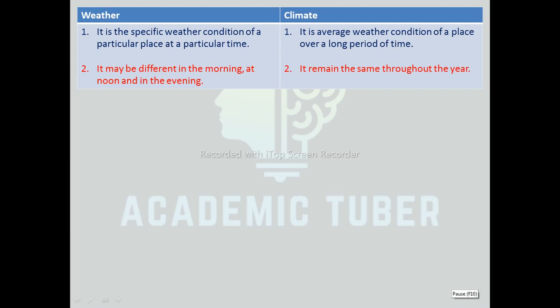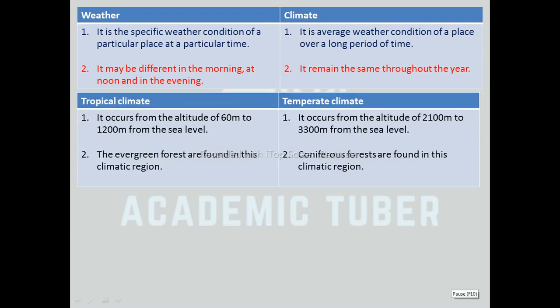Differences between weather and climate: Weather is the specific atmospheric condition of a particular place at a particular time, whereas climate is the average weather condition of a place over a long period of time. Weather may be different in the morning, at noon, and in the evening, whereas climate remains the same throughout the year. Differences between tropical and temperate climate: Tropical climate occurs from an altitude of 60 meters to 1200 meters from sea level, whereas temperate climate occurs from 2100 meters to 3300 meters. In tropical climate, evergreen forests are found, whereas in temperate climate, coniferous forests are found.